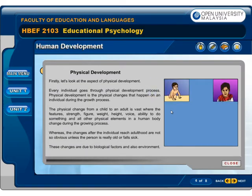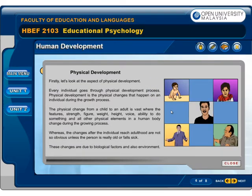Let's look at the aspect of physical development. Every individual goes through a physical development process. Physical development is the physical changes that happen to an individual during the growth process. The physical change from a child to an adult is vast, where the features — strength, figure, weight, height, voice, ability to do something, and all other physical elements in a human body — change during the growing process. The changes after the individual reaches adulthood are not so obvious unless the person is really old or falls sick.